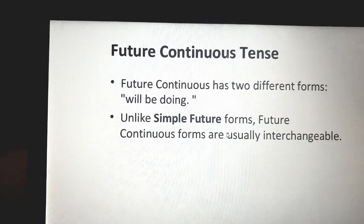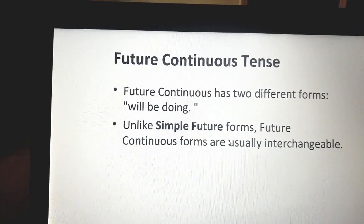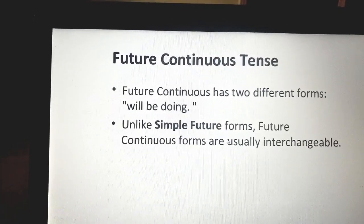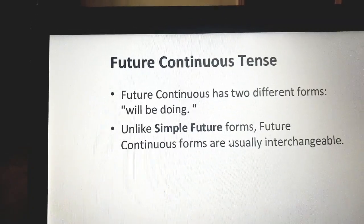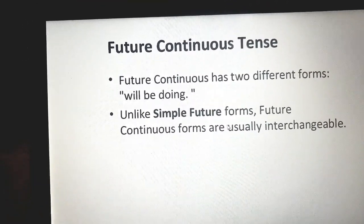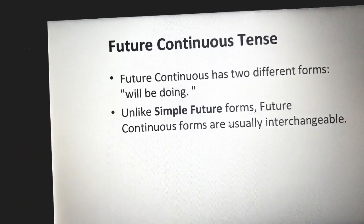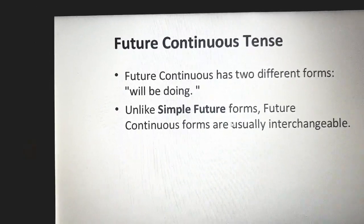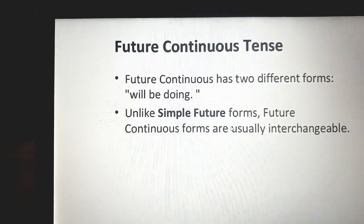The future continuous has two different forms. The first is 'will be doing' — that is, will + be + verb ING. We will explain the forms first before moving to the usages, because you need to understand how to form a sentence in the future continuous. After that, we will go into the usages.